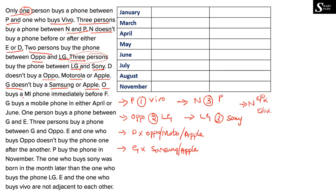O buys a MI phone immediately before F — O has to come immediately before F and O is going to buy a MI phone. We cannot substitute this information yet. Don't get scared after looking at all these clues being kept on hold. We will find one or another way to solve it, so don't lose hope in the middle of the question. You might have already spent one to one and a half minutes writing all these clues.